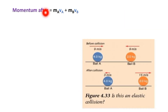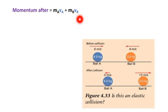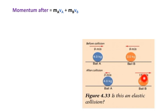Momentum after is equal to momentum of ball A plus momentum of ball B. Momentum after = momentum of ball A (after) plus momentum of ball B (after).